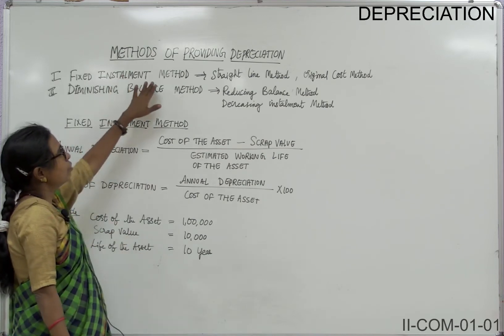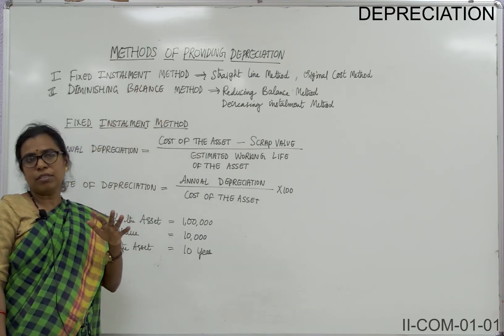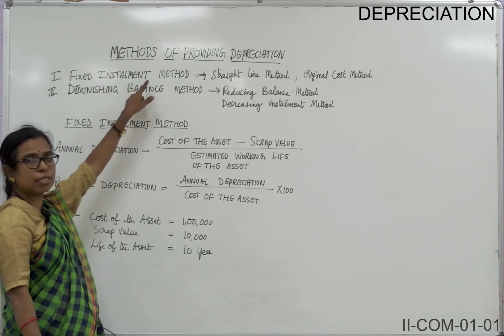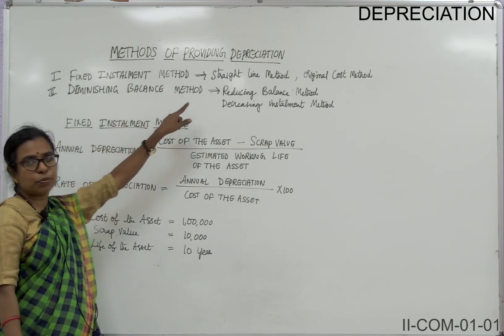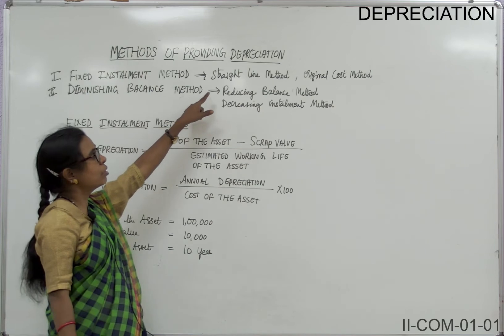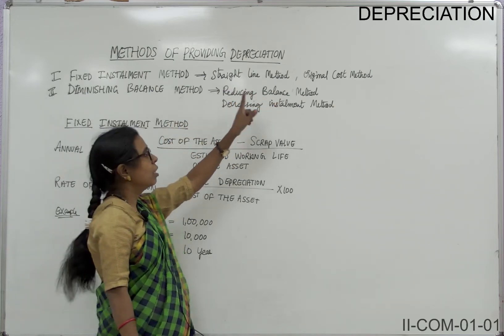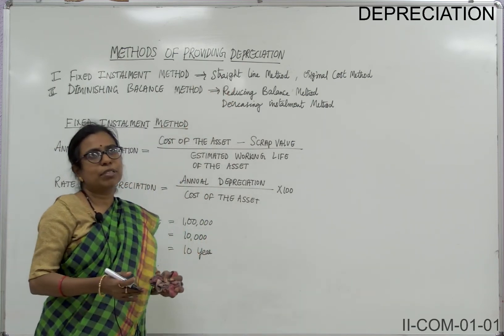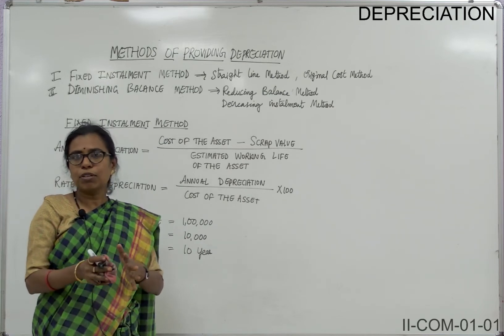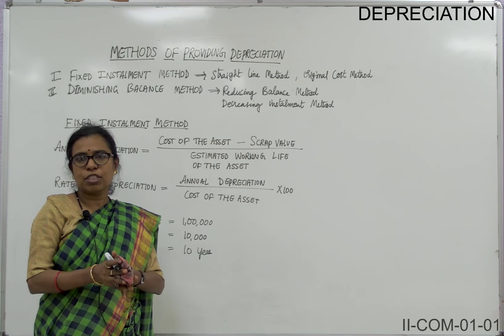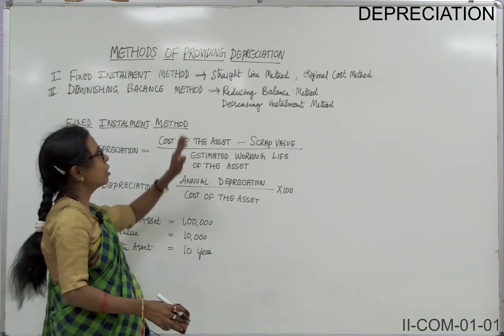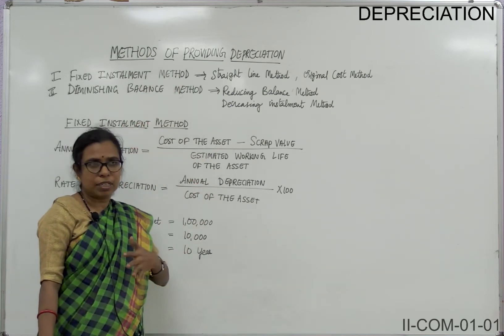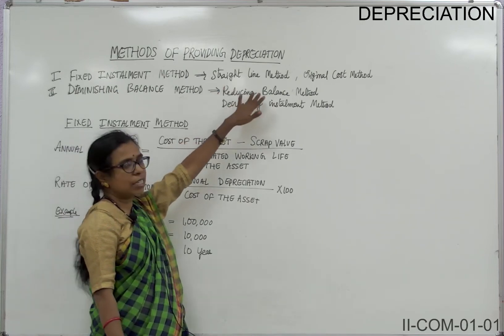Let's go to the next topic: methods of providing depreciation. At the intermediate level, you have two methods. The first method is the fixed installment method and the second is the diminishing balance method. The fixed installment method is also termed as the straight line method or original cost method. It is called a straight line method because the amount of depreciation will remain the same year after year.